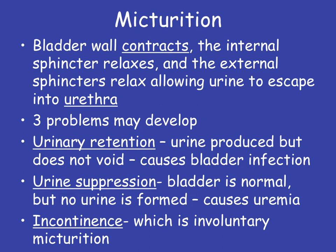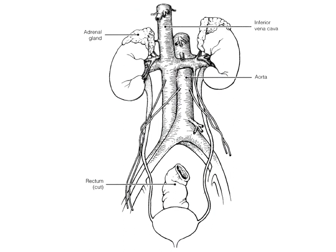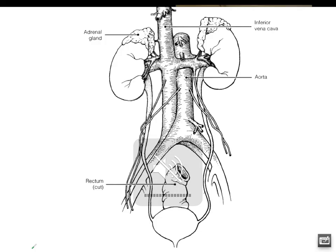Now let's take a look at our three different diagrams. The first one is more of an orientation to how all of these pieces and parts are put together. We can see we have the aorta coming down, and right next to it is the inferior vena cava. Both the aorta and the inferior vena cava tie into the kidneys. As the blood comes down through the aorta, it goes into the kidneys through what we call the renal artery.